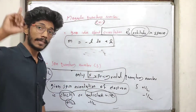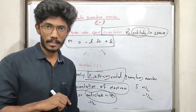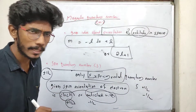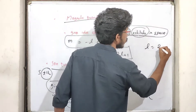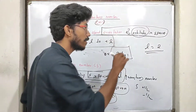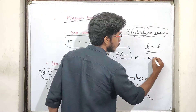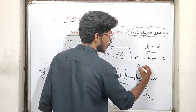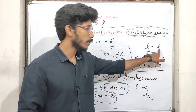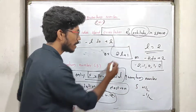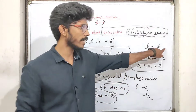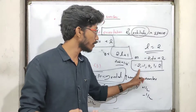The magnetic quantum number m ranges from minus l to plus l, meaning there are 2l+1 values of m. Suppose l=2, which corresponds to the d subshell. Then m ranges from minus 2 to plus 2, giving the values: minus 2, minus 1, 0, 1, 2 — that is 5 values. Since l=2, the number of m values is 2(2)+1 = 5.